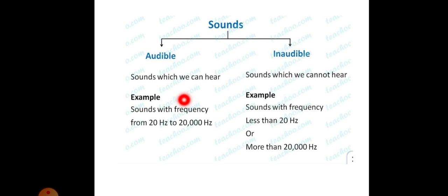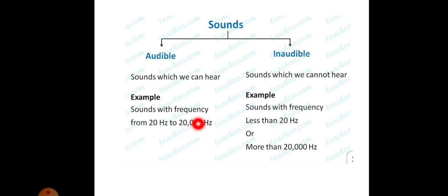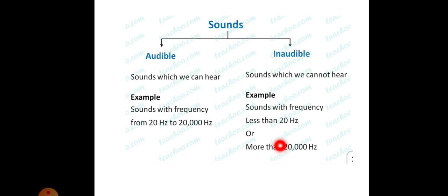Audible sounds have a frequency from 20 hertz to 20,000 hertz. If the sound has a frequency in between 20 hertz to 20,000 hertz, it is called audible sound. The sound with frequency less than 20 hertz and more than 20,000 hertz, which we cannot hear, is called inaudible.